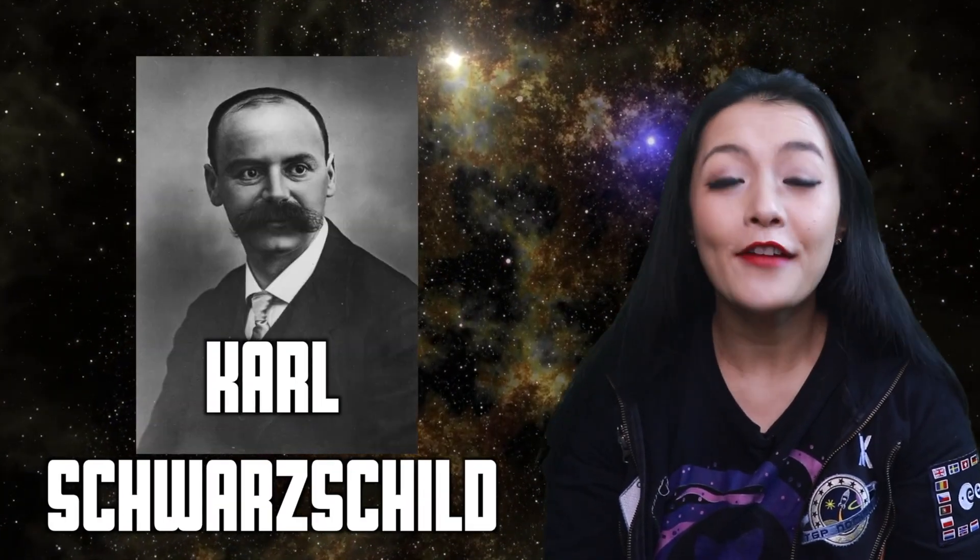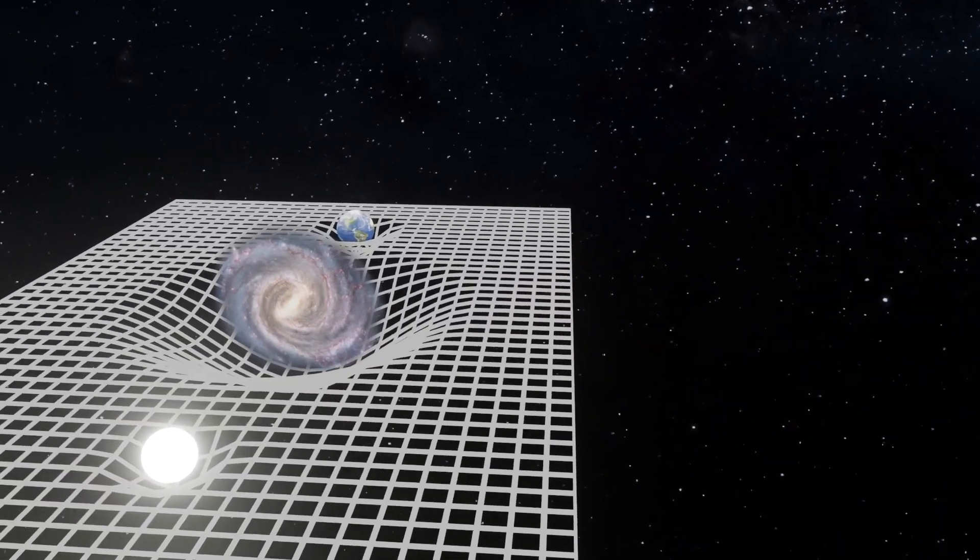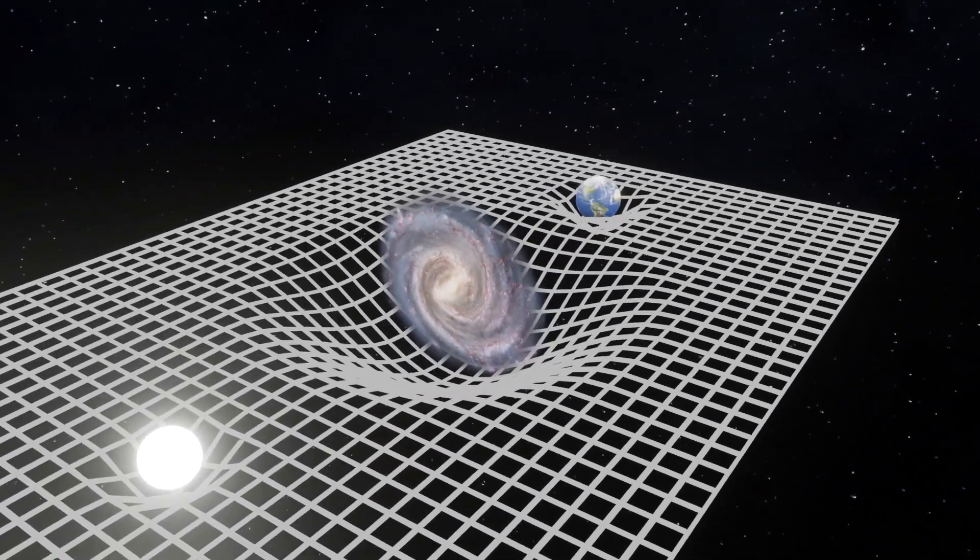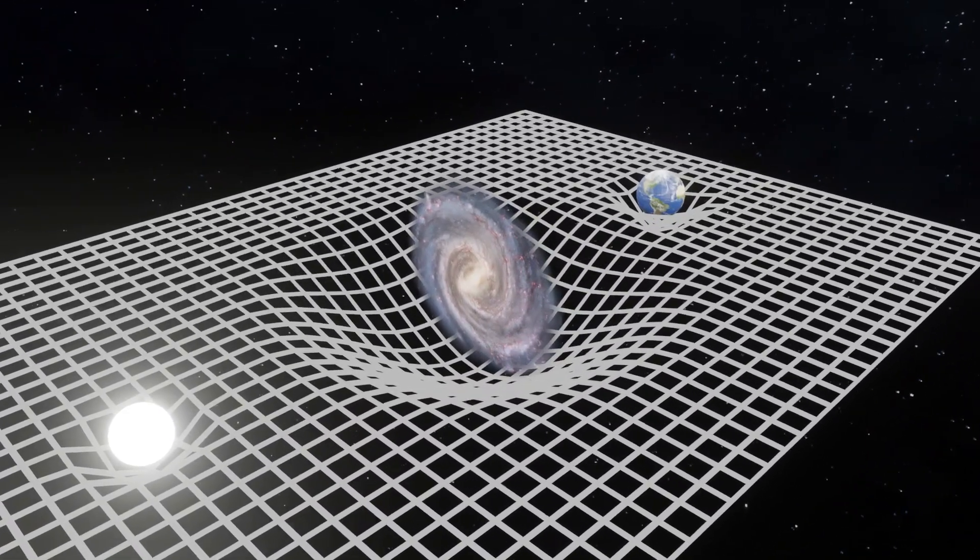Just a year later, physicist Carl Schwarzschild found a mathematical solution to Einstein's field equations in general relativity that describes the space-time around a stationary, spherically symmetric mass. He showed that objects with mass would warp space-time, like when you place any mass onto a sheet of stretched material, it stretches down.